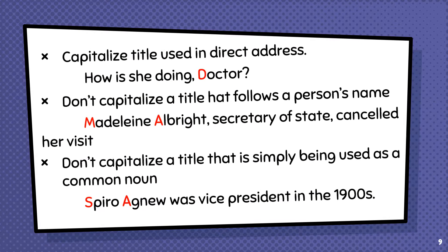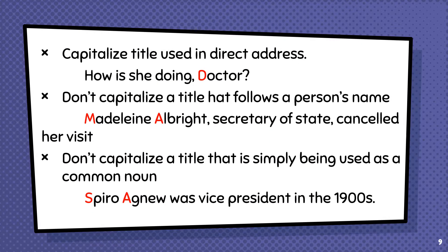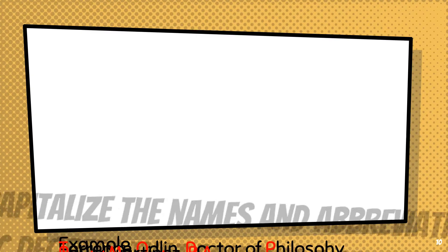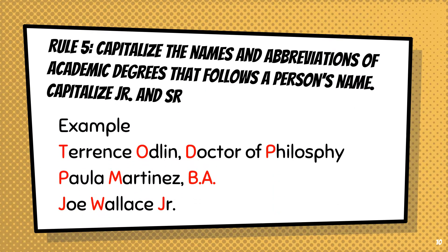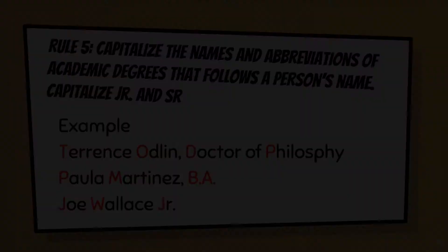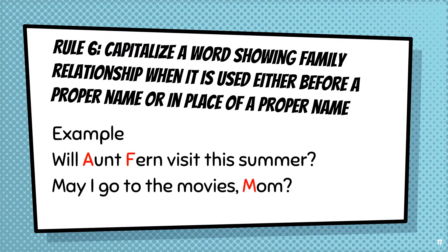Fifth rule: capitalize the name or abbreviation of an academic degree that follows a person's name. Capitalize junior and senior. Capitalize a word showing family relationship when it is used either before a proper name or in place of a proper name.